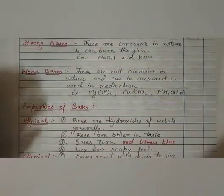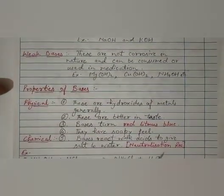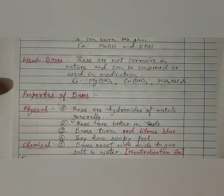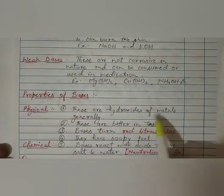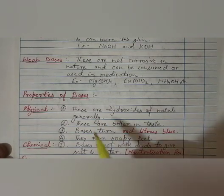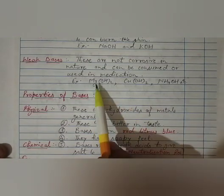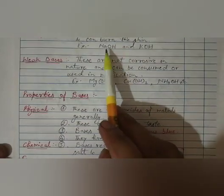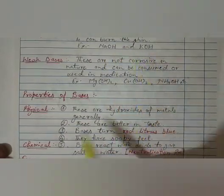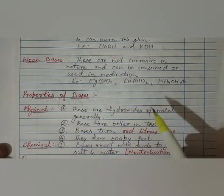Now let's talk about the properties of bases. First of all, we will take the physical properties. These are hydroxides of metals generally. Like already you have seen here: magnesium hydroxide, copper hydroxide, these are metals. Sodium hydroxide, potassium hydroxide, these are also metals. So generally they are metallic hydroxides.